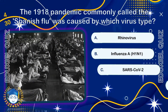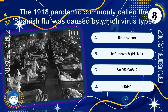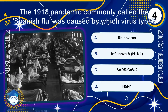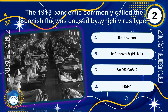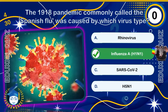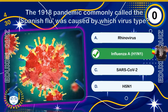The 1918 pandemic, commonly called the Spanish Flu, was caused by which virus type? The 1918 H1N1 influenza pandemic infected about one-third of the global population and caused an estimated 50 million deaths worldwide, making it one of the deadliest outbreaks in history. Unlike seasonal flu, it often struck young, healthy adults.